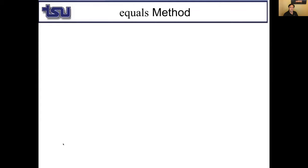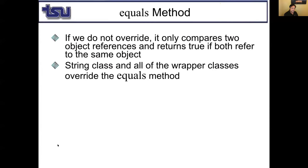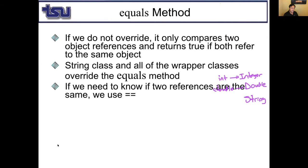Now let's talk about the equals method. If we do not override it, it only compares object references — whether they refer to the same memory space or not. String class and all the wrapper classes already override equals. If we need to know two references point to the same object, we use ==. If we want to check content equality, we use the equals method.